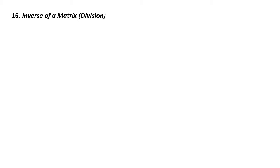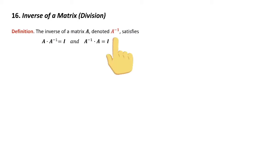We want to consider division in matrix algebra — this is called the inverse of a matrix. We can see how this helps us solve the matrix equation, and this is the framework for solving linear systems of equations. The inverse of a matrix A is written as A to the minus 1.